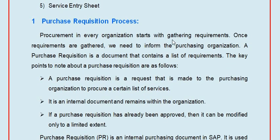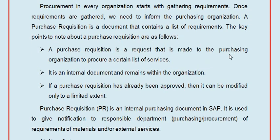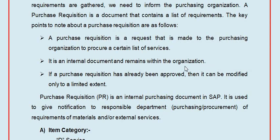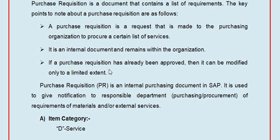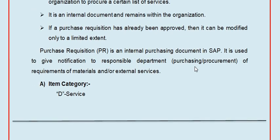Procurement in every organization starts with gathering requirements. Once requirements are gathered, we need to inform the purchasing department. A purchase requisition is a document that contains a list of requirements. It is a request made to the purchasing organization to procure a certain list of services. It is an internal document and remains within the organization.